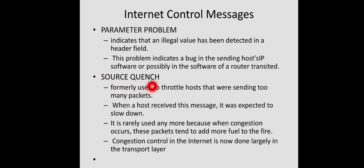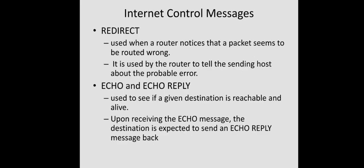Source quench was earlier used for flow control. Since IP does not provide flow control, when congestion occurs a router would use this message to inform the source to reduce its traffic rate. However, it is rarely used nowadays because sending additional packets during congestion adds more fuel to the fire - congestion is caused by too many packets, so sending more makes it worse. Congestion control is left to the transport layer. The redirect message is used when a router notices that a packet seems to be routed incorrectly, informing the sending host about the probable routing error.